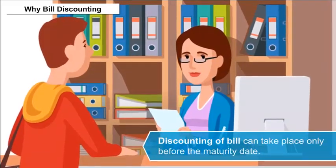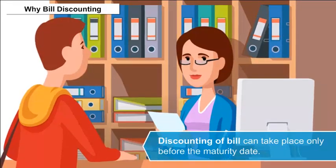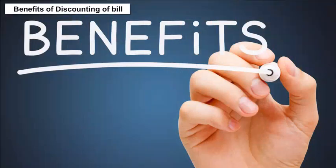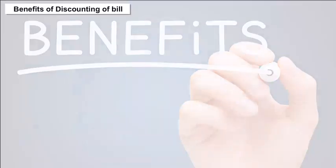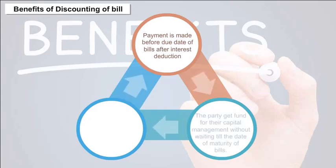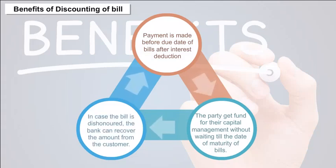Discounting can only take place before the maturity date. Benefits include: payment is made before the due date after interest deduction, allowing the party to get funds for capital management without waiting until maturity. In case the bill is dishonored, the bank can recover the amount from the customer.